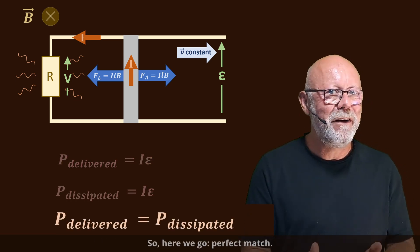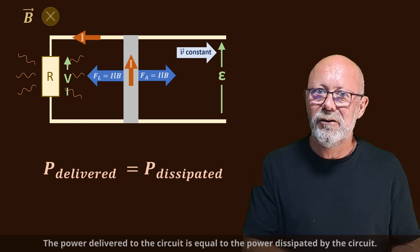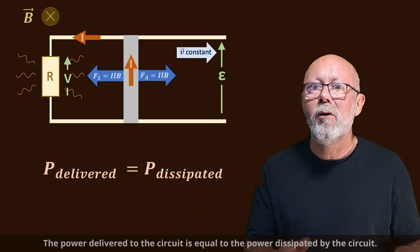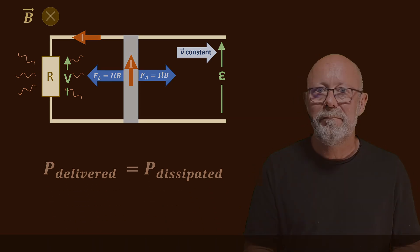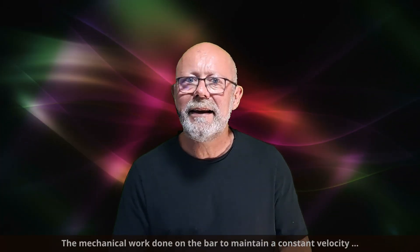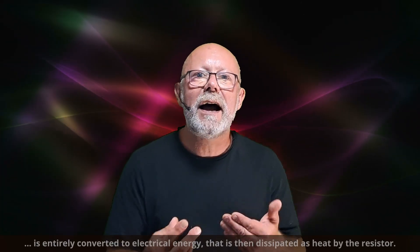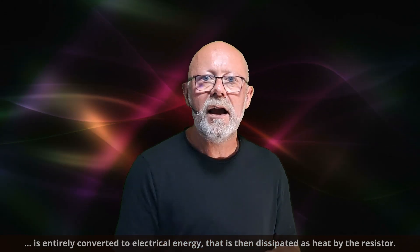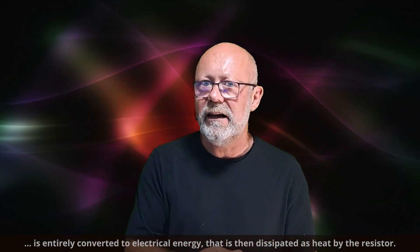This is the same expression as for the power dissipated. So here we go. Perfect match. The power delivered to the circuit is equal to the power dissipated by the circuit. The mechanical work done on the bar to maintain a constant velocity is entirely converted to electrical energy that is then dissipated as heat by the resistor.